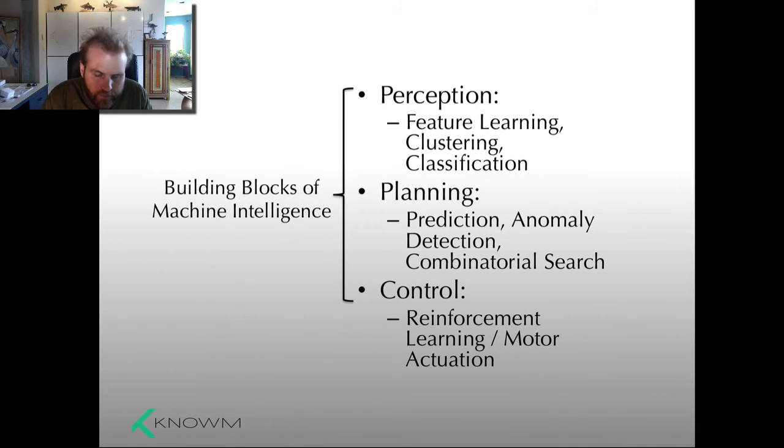Planning. This is combinatorial optimization. This involves making predictions, detecting anomalies, and doing combinatorial search. When you're trying to plan your trip across town, and you have to get groceries and pick up the kids at soccer, and get to some appointment by some time, in your head, you're thinking about all the routes to take. For example, the traveling salesman problem. These are all examples of planning. And finally, control. The ability to actuate multiple degrees of freedom to attain some reward. This is important in robotics, clearly.